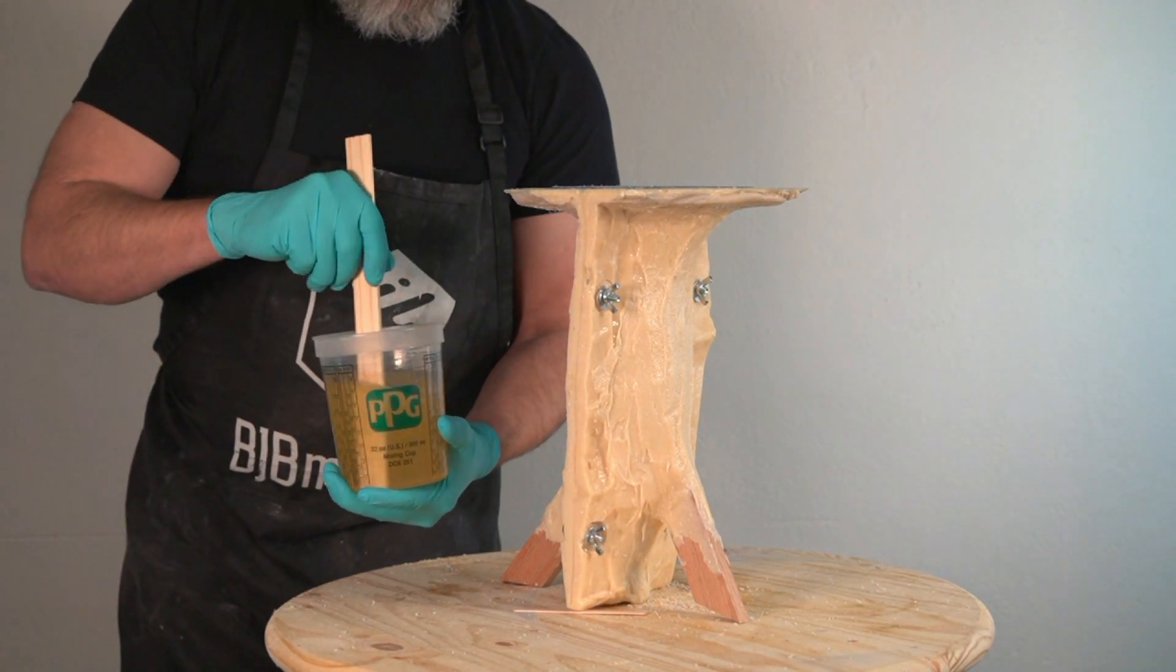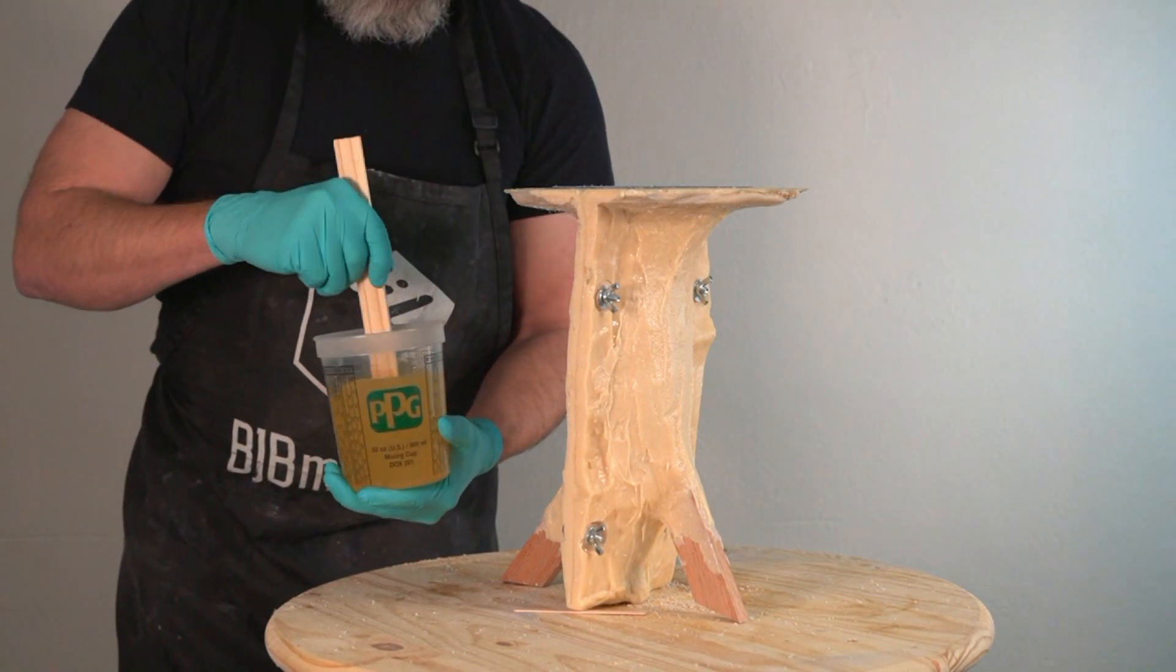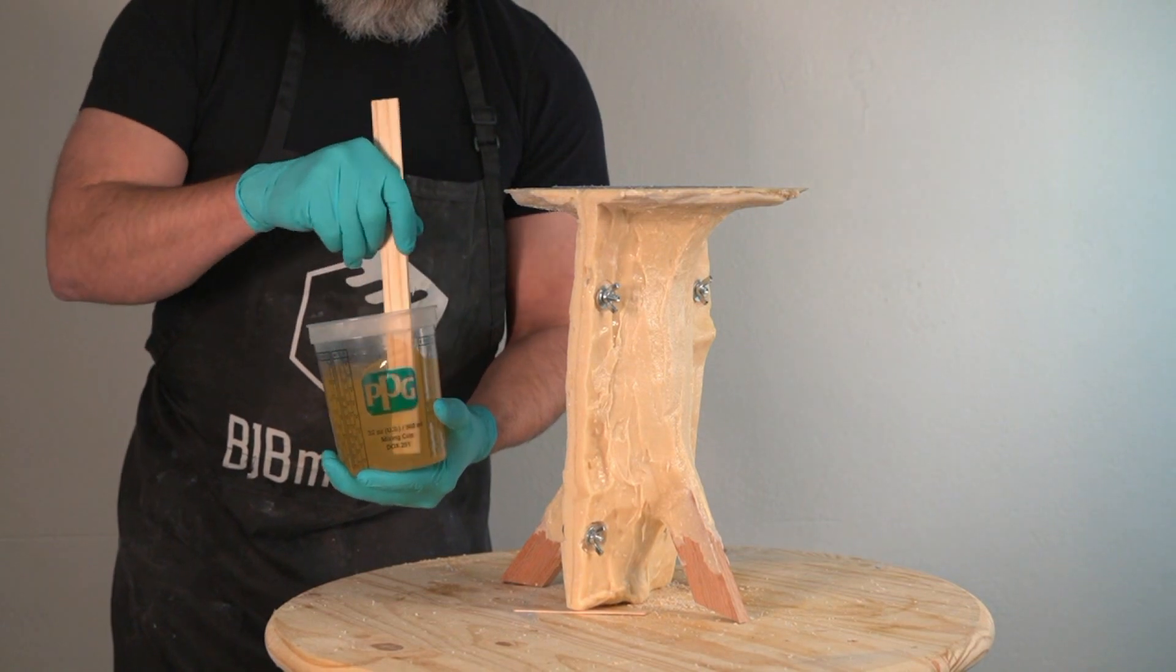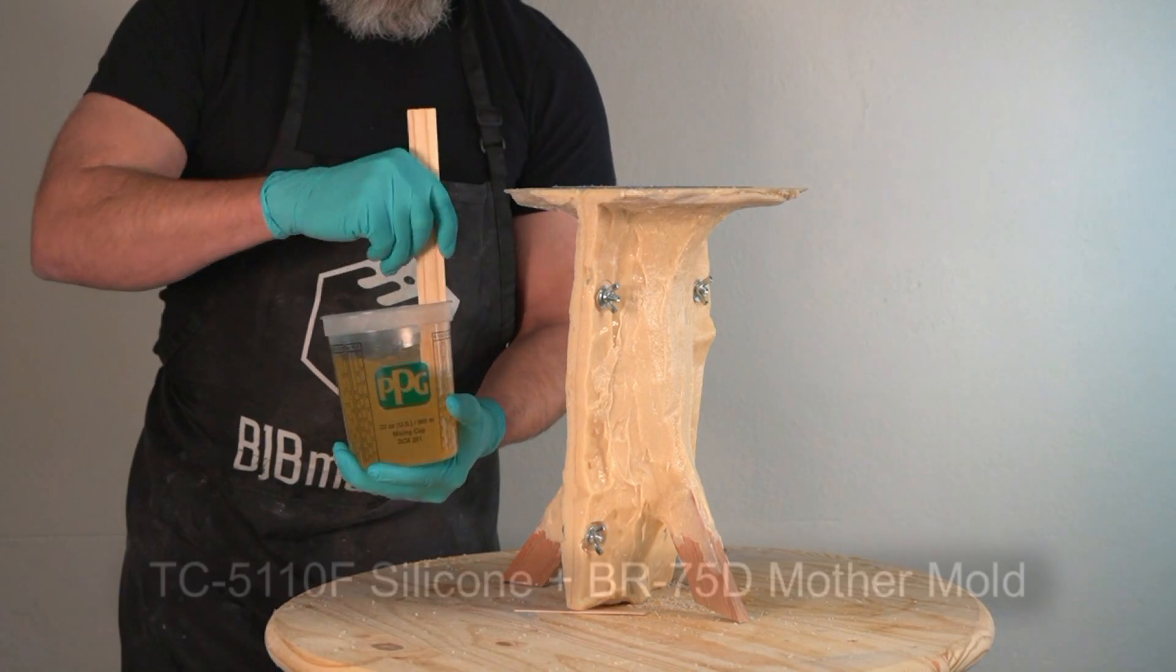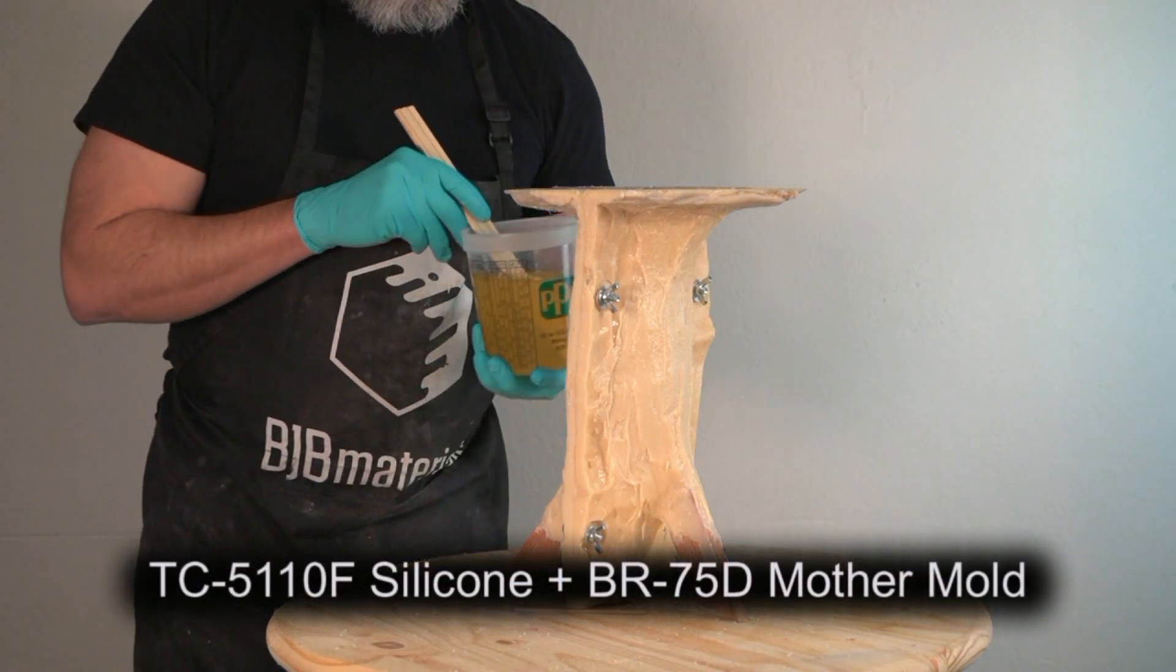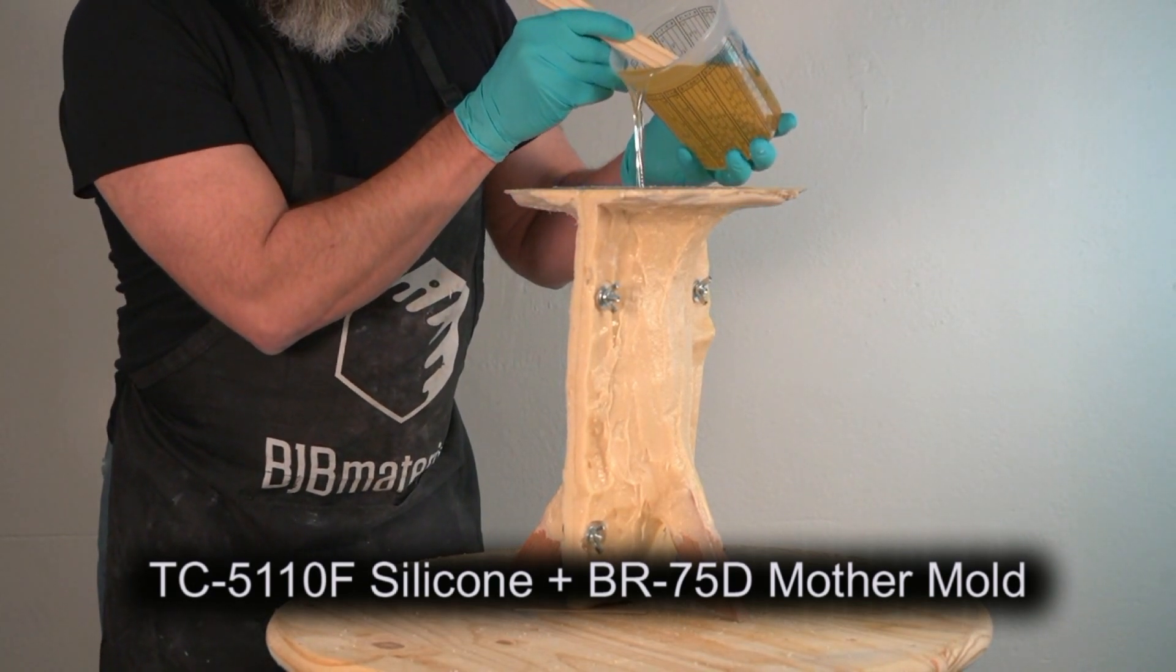Once I've thoroughly mixed up my resin, which typically only takes about 25 to 30 seconds of thorough mixing, I'm ready to pour that into our mold. This is a silicone matrix mold I made in a previous tutorial with TC5110F platinum silicone.